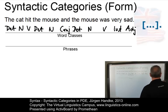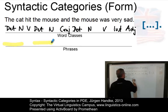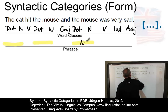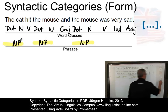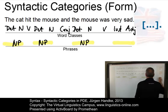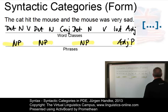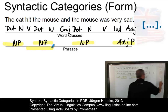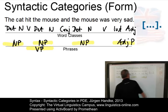Then we have the phrasal level. A determiner and a noun — here we have three examples — constitute a so-called noun phrase. So, here we have three noun phrases. And then at the end we have an adjectival phrase, consisting of our intensifier and the adjective. The verb plus the noun phrase — the result is a verb phrase.